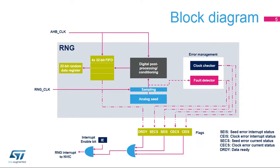This simplified block diagram of the RNG shows its basic functional and control modules. The random number generator is based on an analog circuit made of several ring oscillators whose outputs are sampled, then XOR'd, to generate the seeds that feed a digital post-processing block.